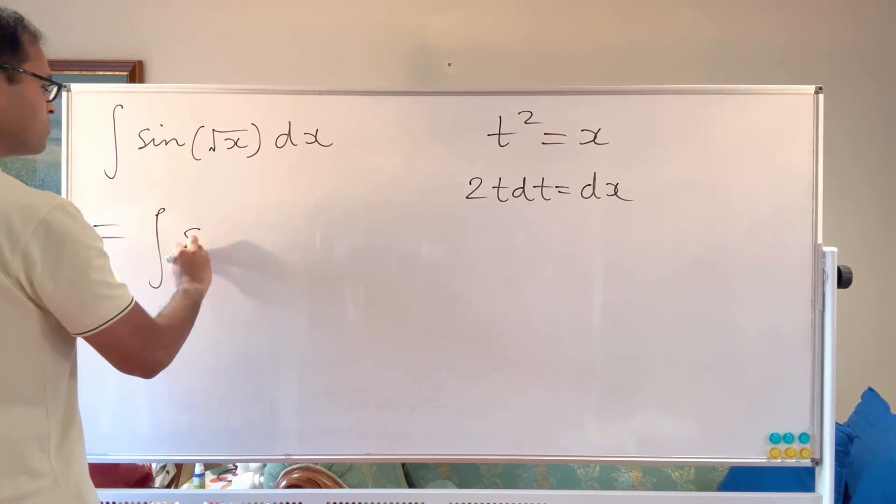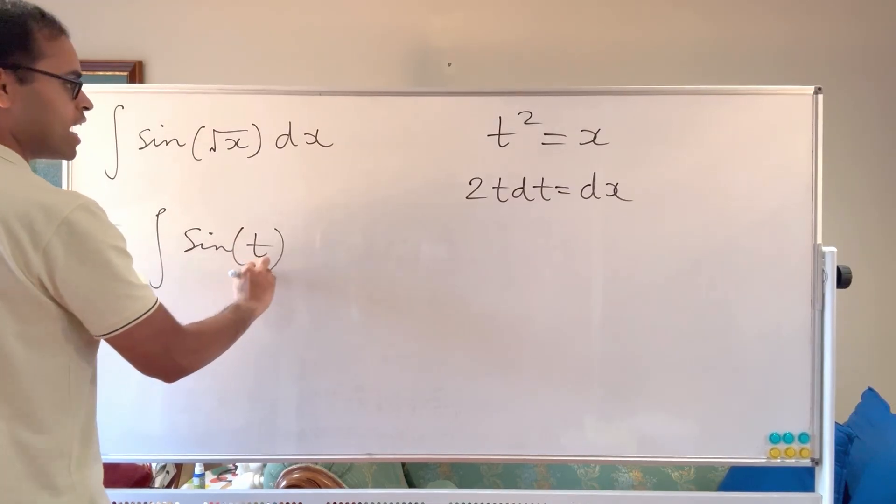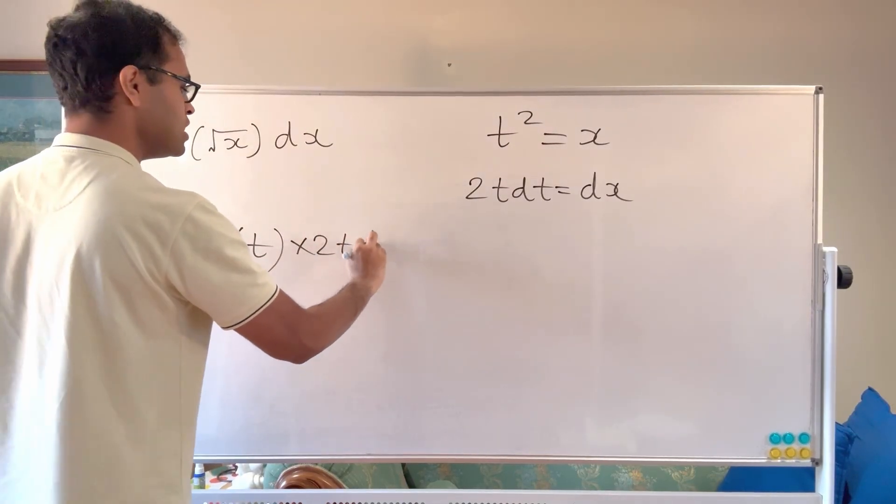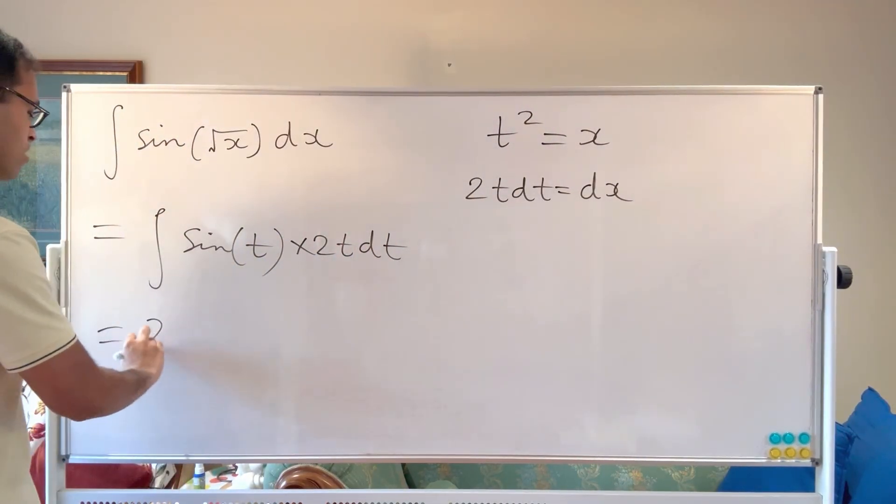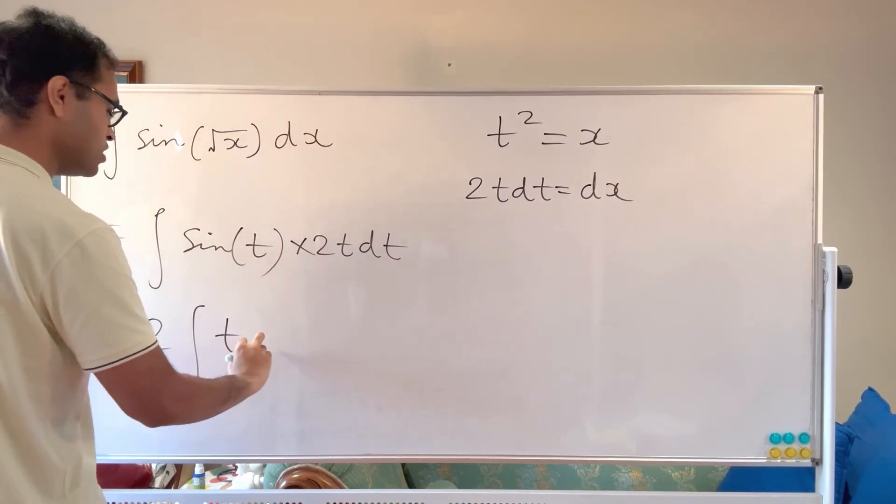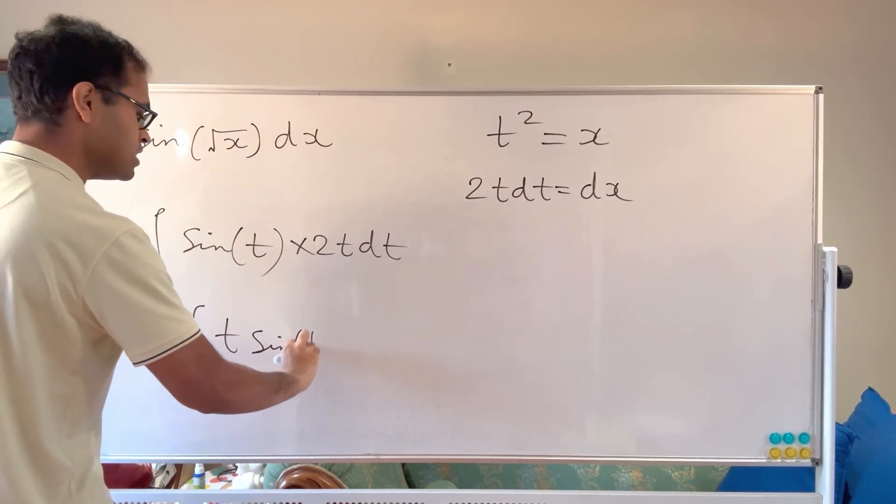So we get the integral of sine of t times dx which is going to equal 2t dt and that's pretty cool because now I've got the integral of 2 times the integral of t sine of t dt.